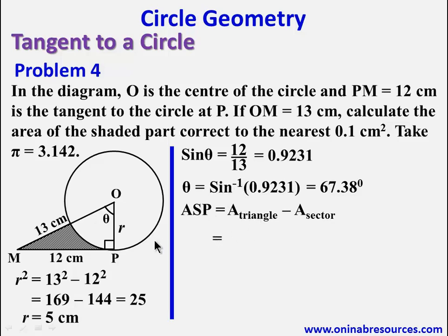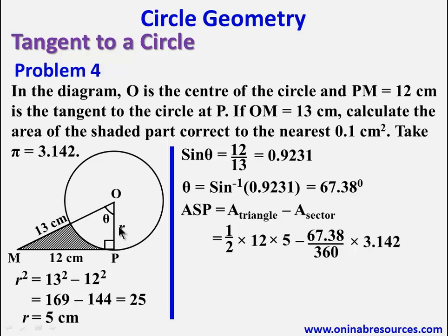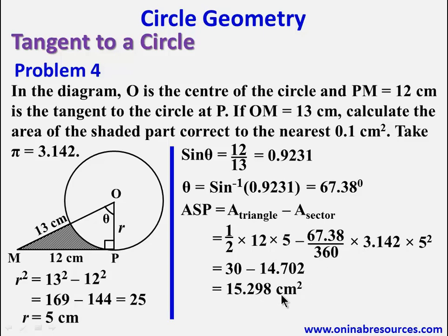The area of the shaded part equals area of triangle minus area of sector. Area of triangle is half times 12 times 5, giving 30. Area of sector is 67.38 over 360 times 3.142 times 5 squared, which gives 14.702. So the shaded area is 30 minus 14.702, giving 15.298 square centimeters. To the nearest 0.1 square centimeters, that is 15.3 square centimeters. We have done justice to problem 4.